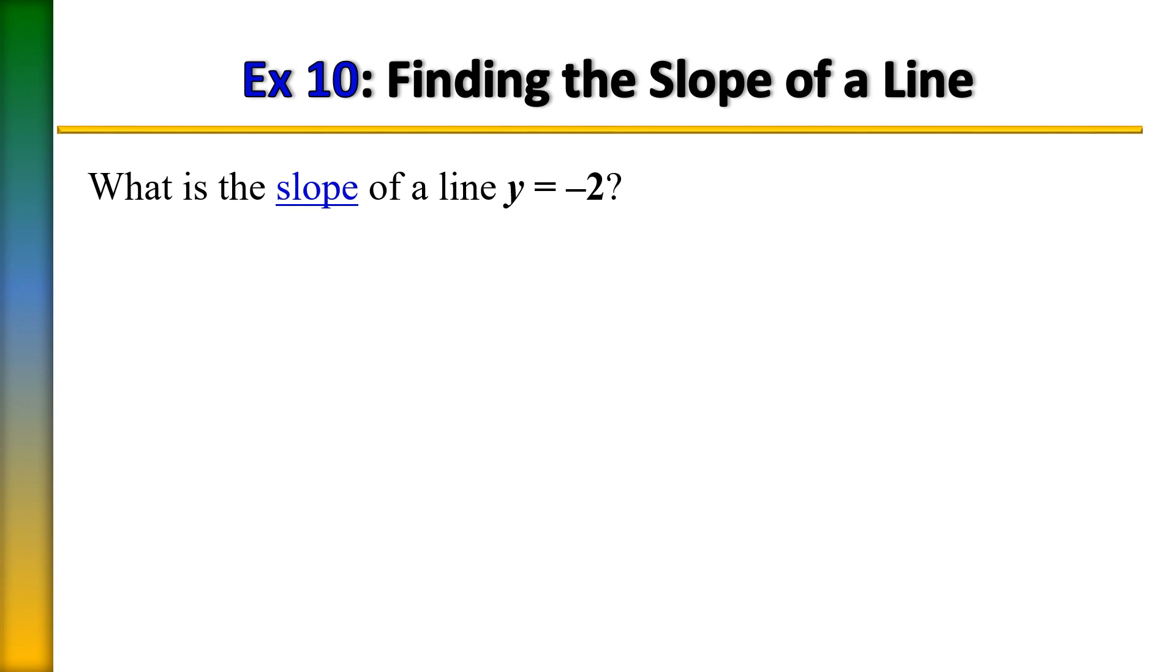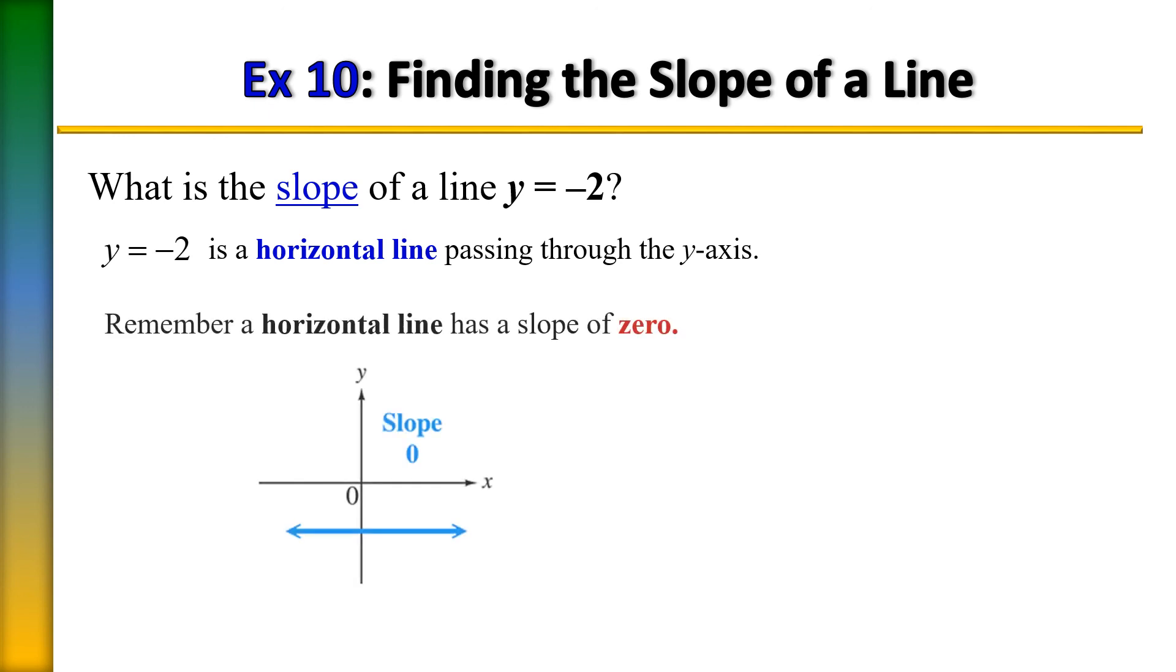Recall the slope of all horizontal lines have a zero slope, and the reason for that is because you have a constant line that indicates there's no change. Recall slope is all about change. So then the slope of the line y equals negative 2 would be m equals 0 because that equation of a line has a slope of 0 because it is a horizontal line.